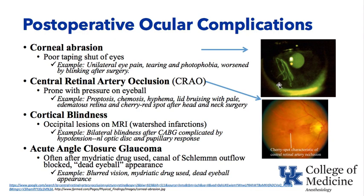Central retinal artery occlusion is the next postoperative ocular complication. A patient prone with pressure on their eyeball is a setup for this. On fundus exam you see the cherry red spot characteristic of central retinal artery occlusion. The eye tends to be proptotic and chemotic, with hyphema and lid bruising, and a pale edematous retina. The cherry red spot is classic after head and neck surgery. If a patient has been prone or had head and neck surgery and cannot see well, think central retinal artery occlusion.